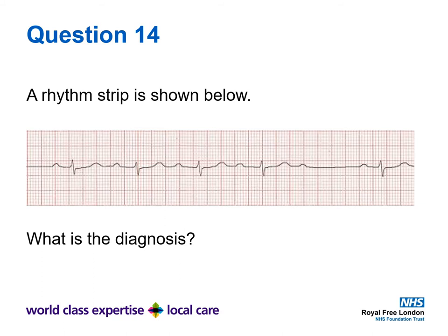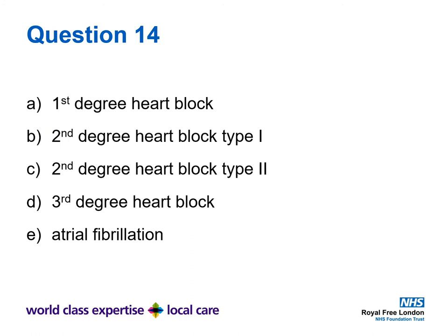Question fourteen. A rhythm strip is shown below. Review the rhythm strip and decide what you think the diagnosis is. Is it A) first degree heart block, B) second degree heart block type one, C) second degree heart block type two, D) third degree heart block, or E) atrial fibrillation?